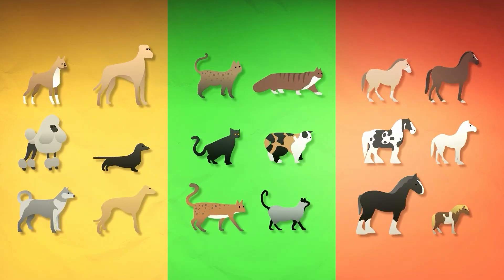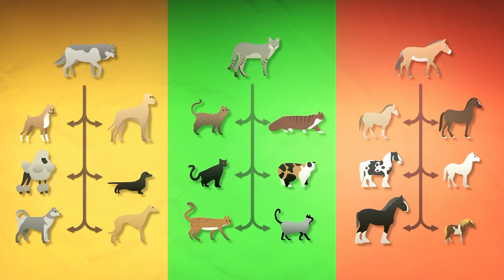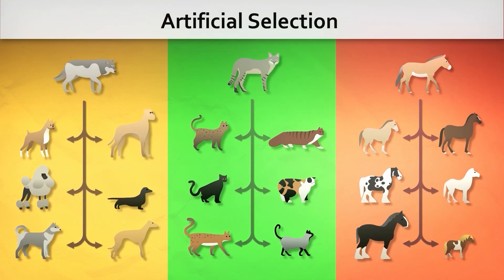The various breeds of dogs, cats, and horses did not exist in nature either, and are products of selective breeding. This process, which causes a controlled change in the characteristics of a population, is called artificial selection.